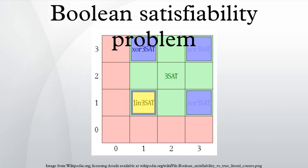A useful property of Cook's reduction is that it preserves the number of accepting answers. For example, deciding whether a given graph has a valid three-coloring is another problem in NP. If a graph has 17 valid three-colorings, the SAT formula produced by the Cook-Levin reduction will have 17 satisfying assignments. NP-completeness only refers to the runtime of the worst-case instances, and many instances that occur in practical applications can be solved much more quickly.